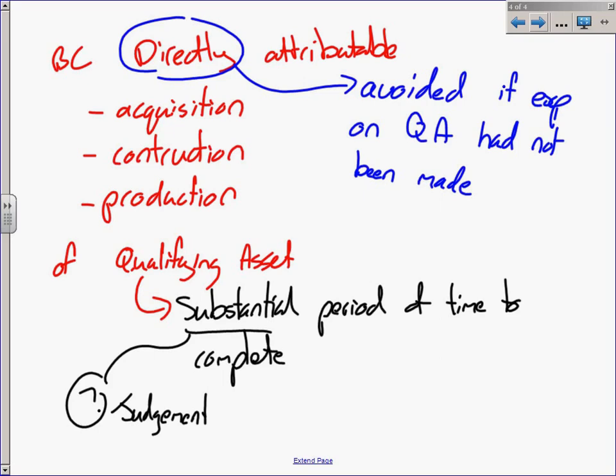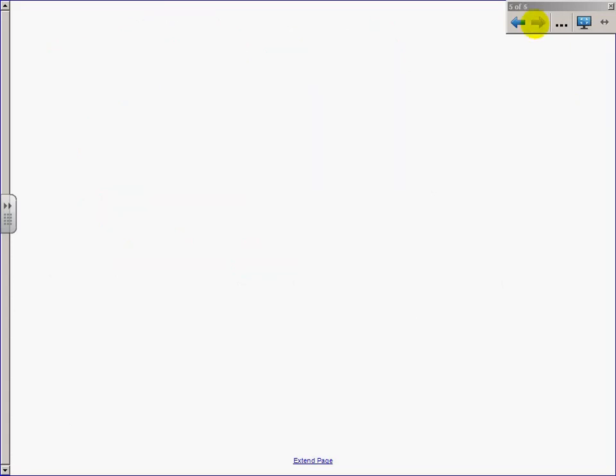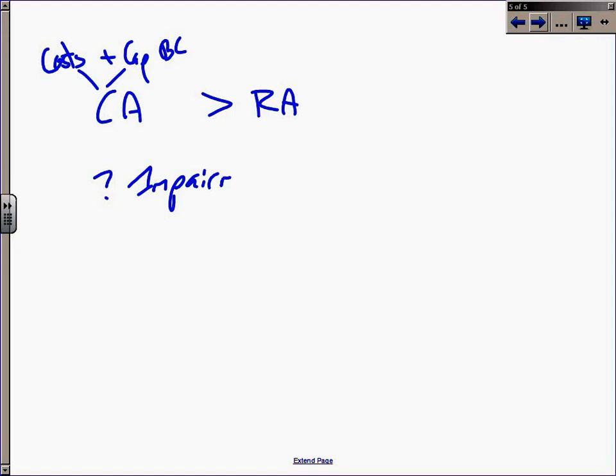Obviously what happens after you've done this whole process: you have the carrying amount, which is the costs plus the capitalized borrowing costs. Now what happens after you've capitalized the borrowing costs if that carrying amount is bigger than the recoverable amount? Then you would have to consider the asset for impairment, so you have an impairment event. But you do not stop the capitalization during this period.